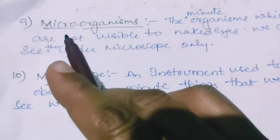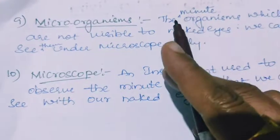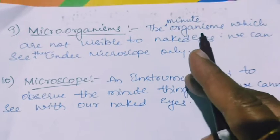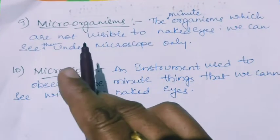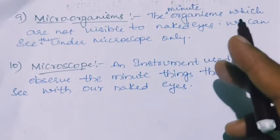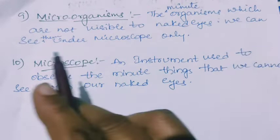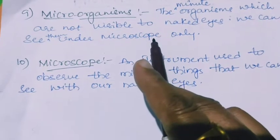Micro-organisms: the minute organisms which are not visible to the naked eye. We can see them under a microscope only.